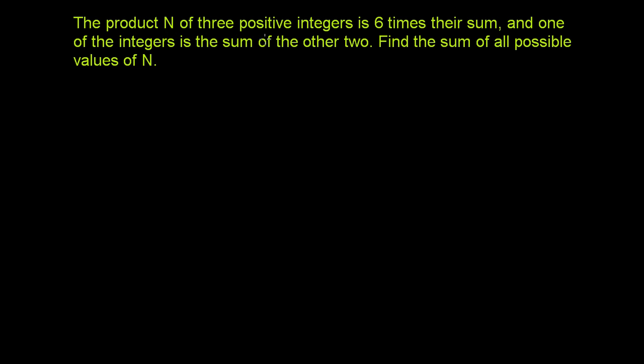The product n of three positive integers is six times their sum, and one of the integers is the sum of the other two. Find the sum of all possible values of n.